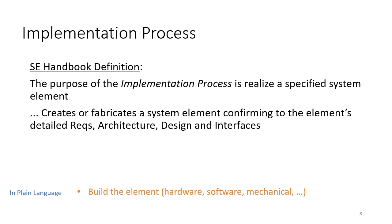The System Engineering Handbook defines the implementation process as the process to realize a specified system element — it creates or fabricates a system element conforming to the element's detailed requirements, architecture, design, and interfaces. In plain language, this is the process where you're going to build the element — hardware, software, mechanical. Your organization may actually be doing the building or it may outsource it to the supply chain.